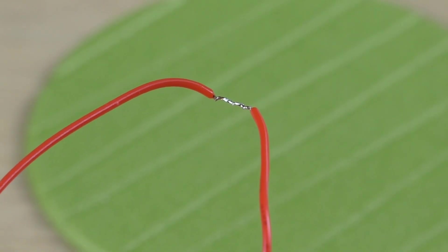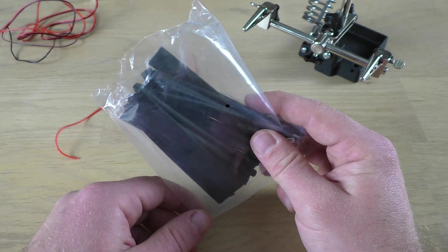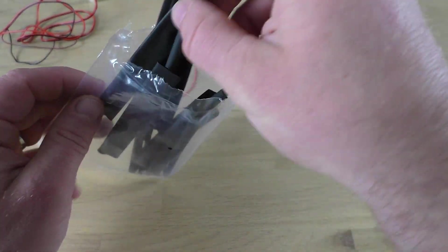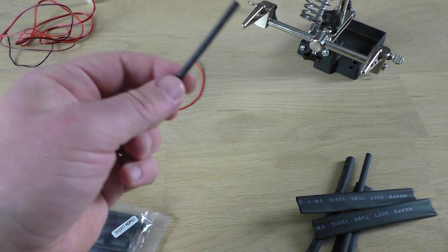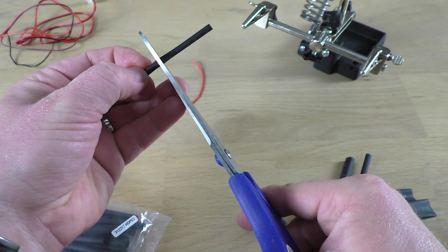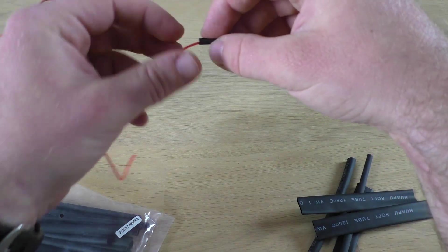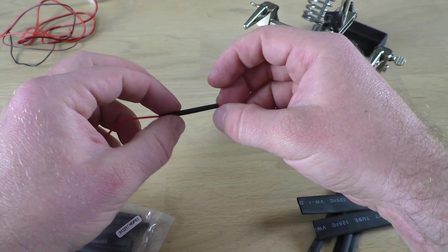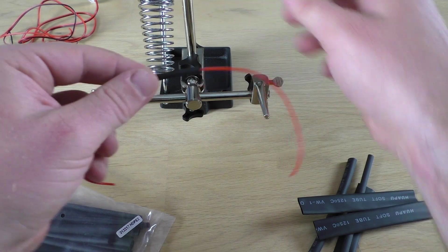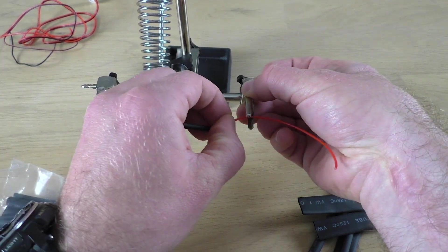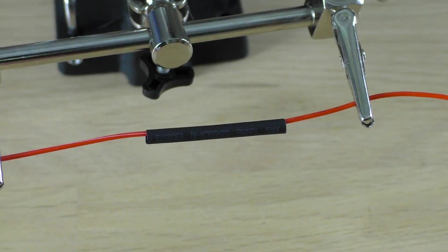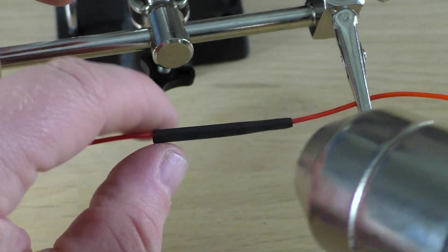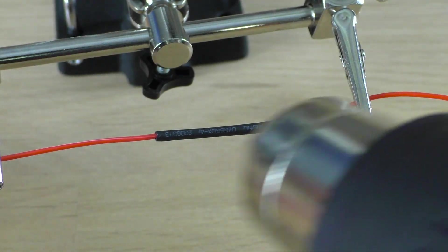You can then use electrical tape as insulation again, or you could buy special heat shrink tubing. Just place it around the splice and use hot air. The tube will shrink and insulate the wires, but also hold them together.